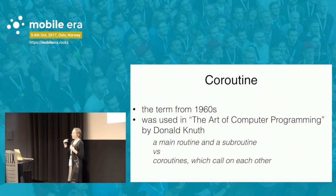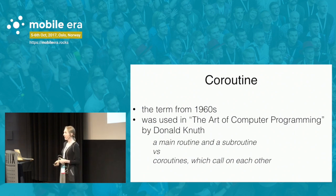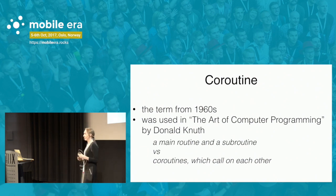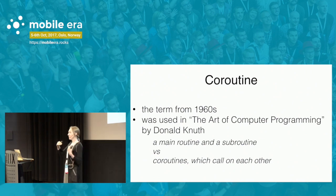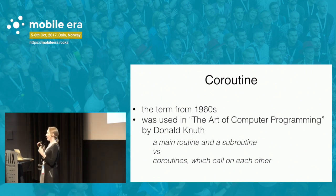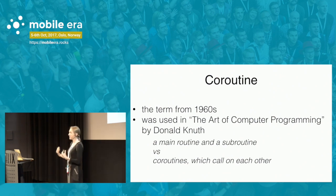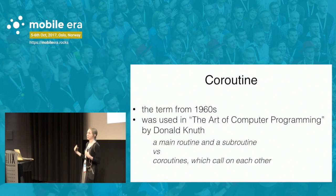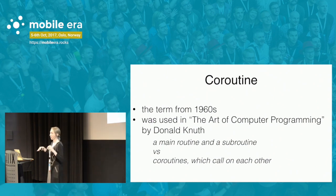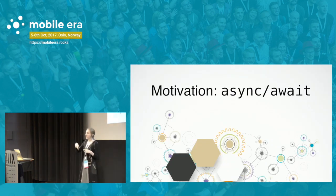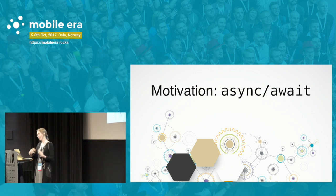The term 'coroutine' wasn't invented by the Kotlin team — it was known for a long time already. It was invented in the 1950s. At that time, before multi-threaded operating systems appeared, it was used to model asynchronous programming — to model situations where we want parts of our program to interoperate and call each other.